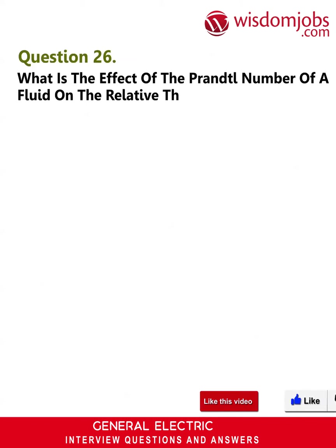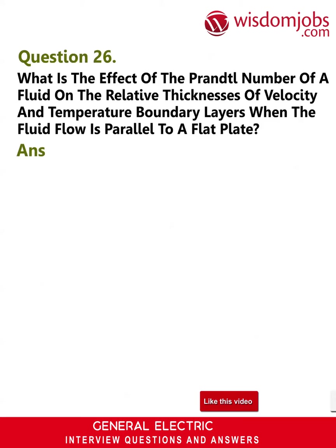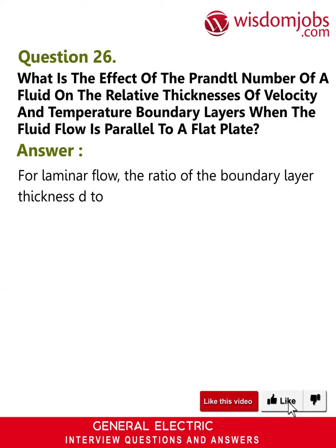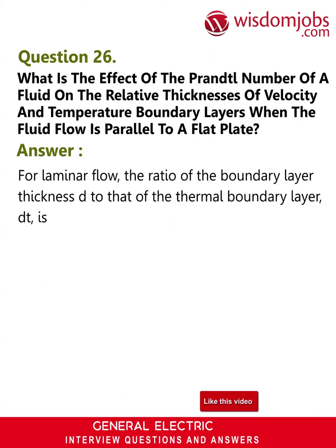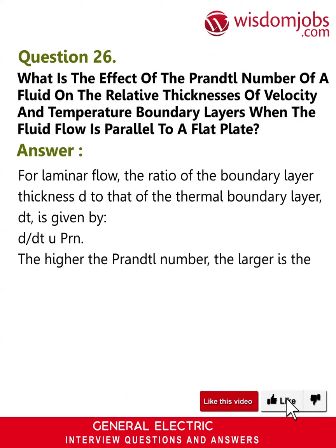Question 26: What is the effect of the Prandtl number of a fluid on the relative thicknesses of the velocity and temperature boundary layers when fluid flow is parallel to a flat plate? Answer: For laminar flow, the ratio of the boundary layer thickness δ to the thermal boundary layer thickness δ_t is given by δ / δ_t ≈ Pr^n. The higher the Prandtl number, the larger is the ratio.